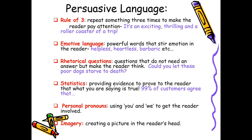Rhetorical questions are questions that don't need an answer but make the reader think. For example, if you were trying to persuade someone to donate to a charity looking after stray dogs, you might ask 'could you let these poor dogs starve to death?' Statistics means data — facts, percentages, numbers — providing evidence to prove to the reader that what you're saying is true. You might say something like '99% of customers agree that Kinva is the best village in the West Midlands.'